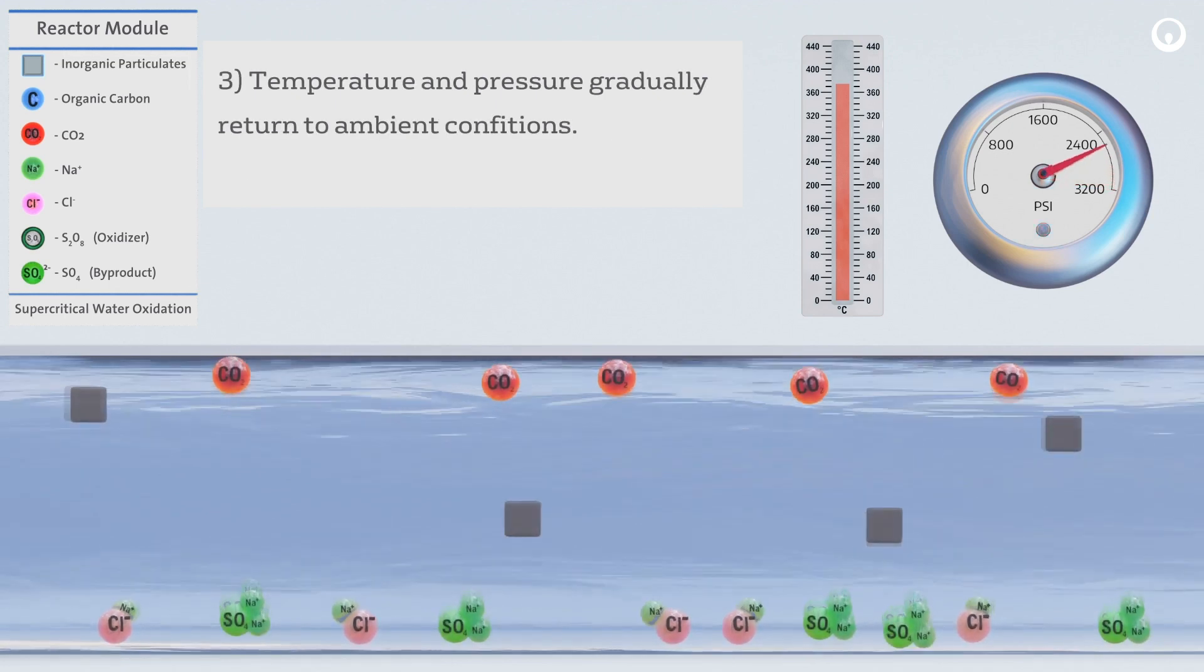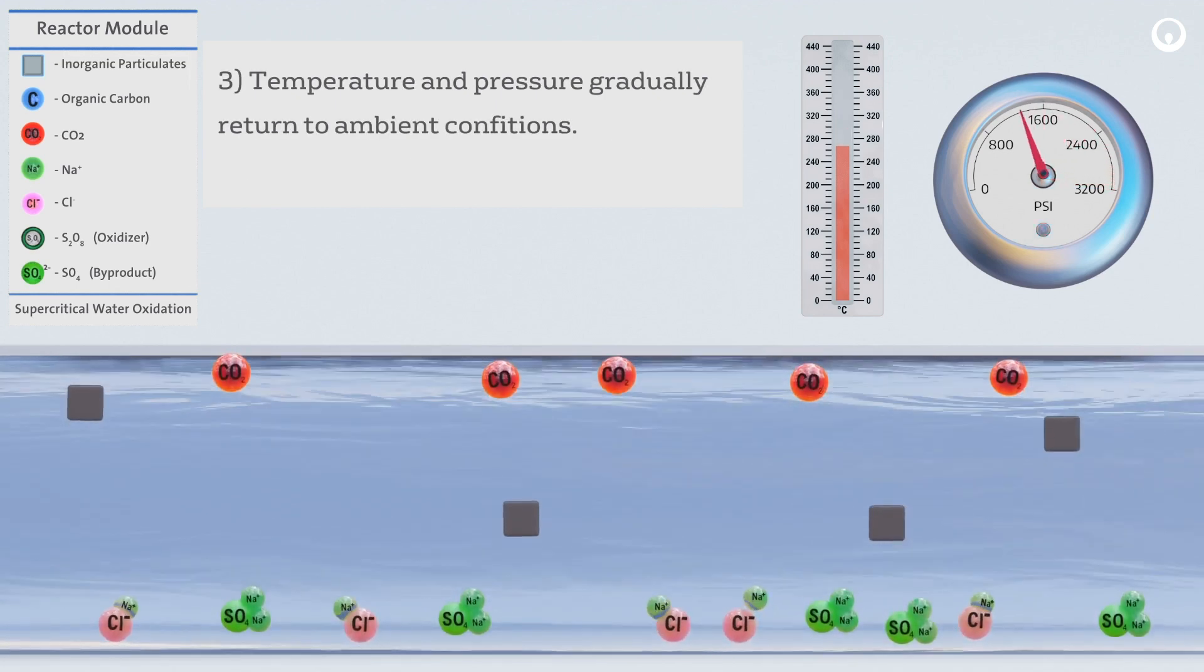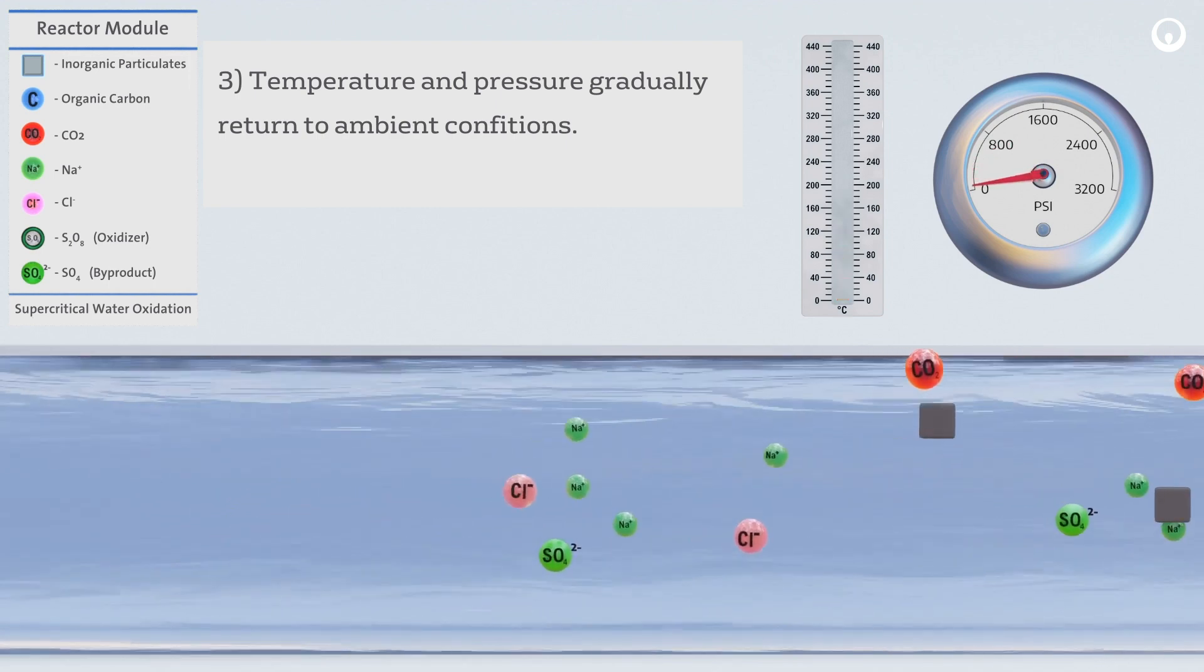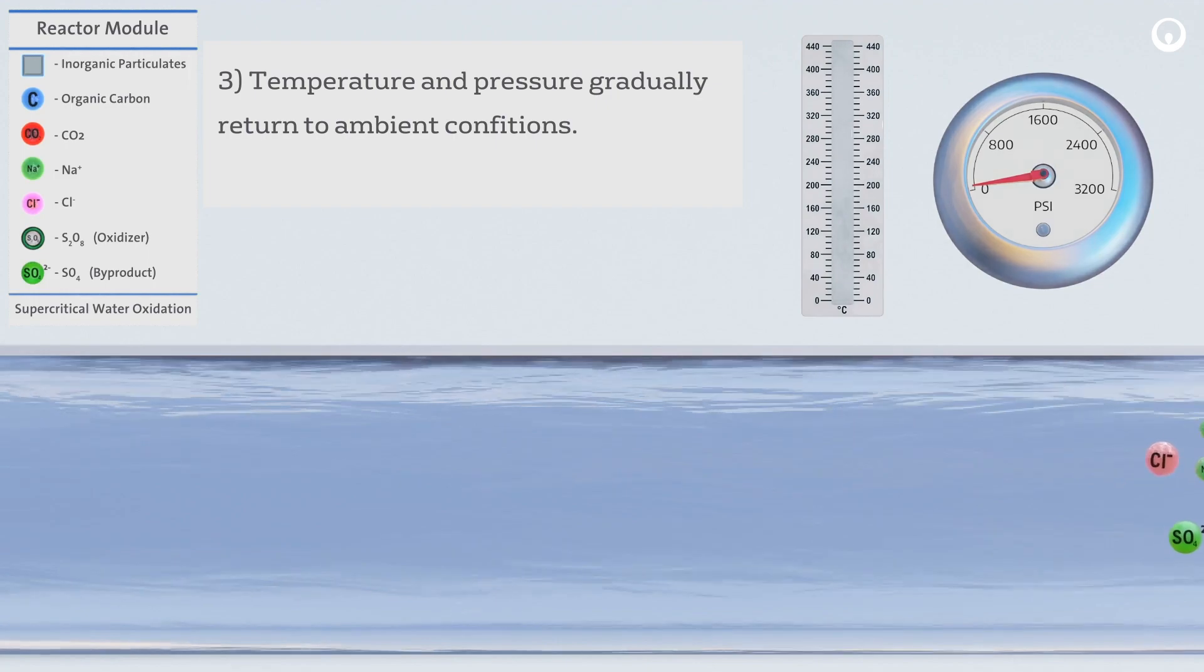Lastly, temperature and pressure gradually return back to ambient conditions. Salts dissolve again in the water and are flushed out of the reactor, along with any remaining particulates.